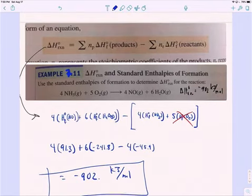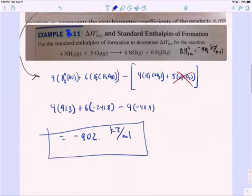So recap for this one. We apply the equation. The standard heat of reaction is the moles of products times heat of formation of products minus the sum of the moles of reactants times heat of formation of reactants. We apply it, noting that the heat of formation of the elemental oxygen is zero and making sure that we have the right ones using water vapor instead of liquid water. We get the minus 902 kilojoules per mole for this reaction.